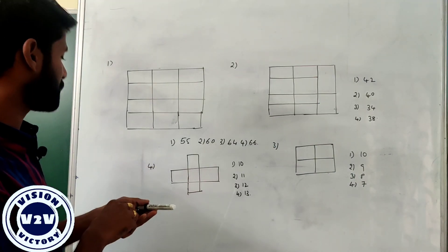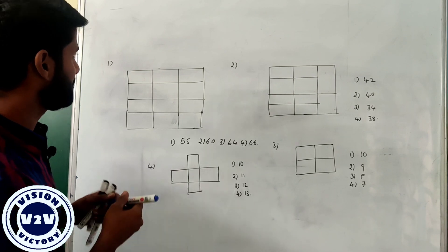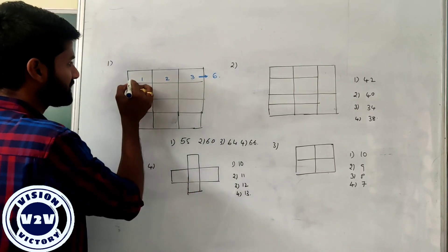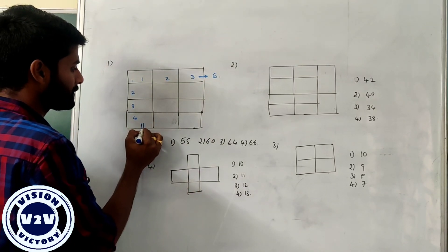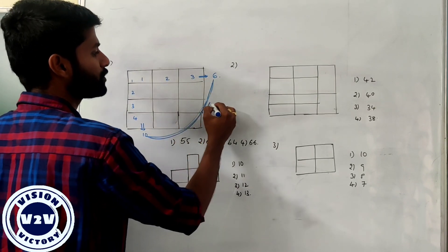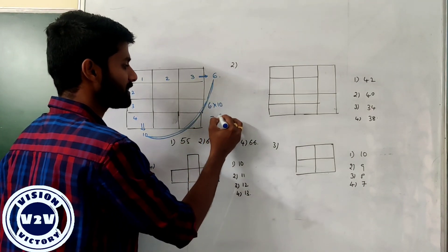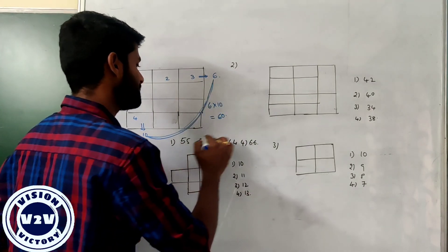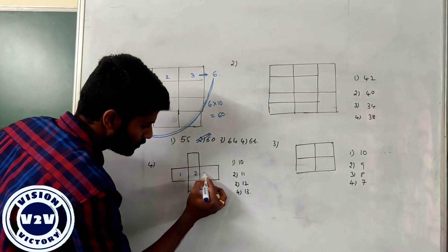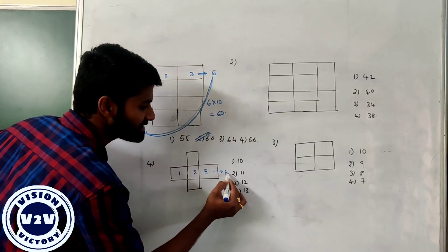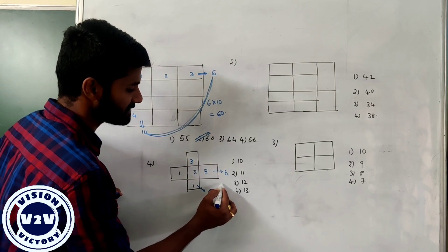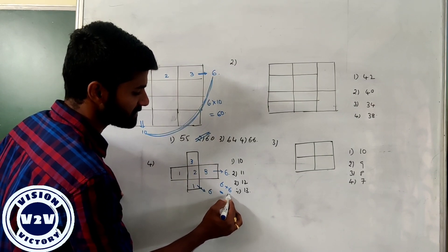Count the total number of rectangles for this figure. Simply add these numbers: one, two, three — the total resultant is 6. In the same way: one, two, three, four — if you add all the numbers the resultant becomes 10. If you multiply these two, for a rectangle we multiply these two numbers: 6 times 10. The total number of rectangles are 60.